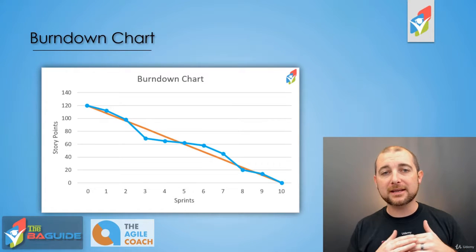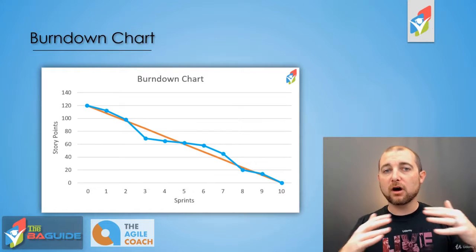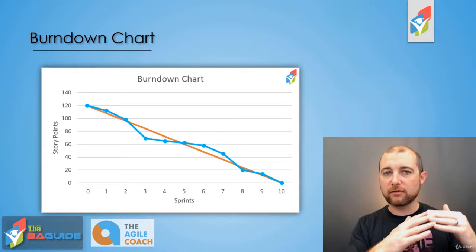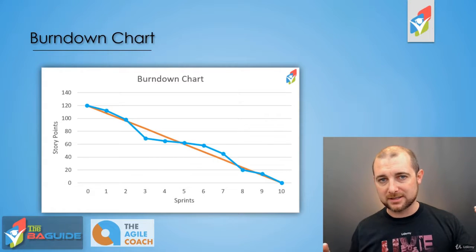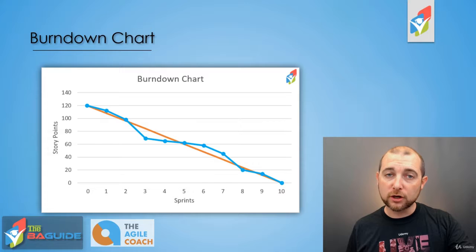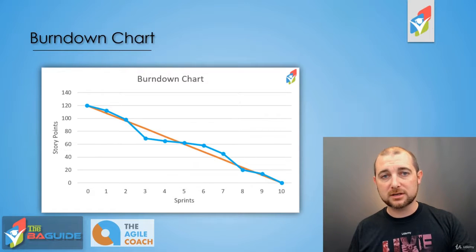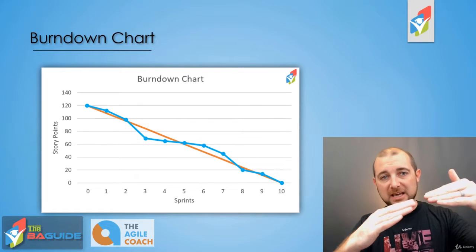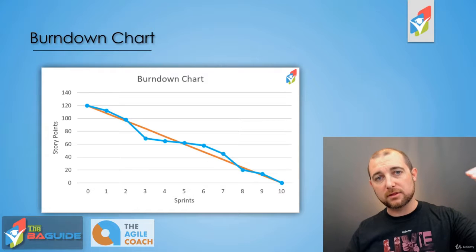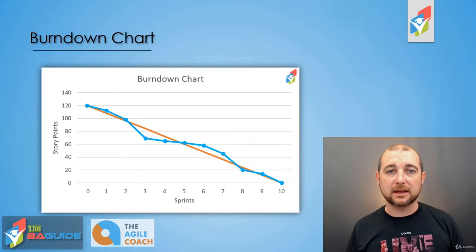The orange line is representative of what we want from a trending standpoint. For us to achieve our 120 story points in our 10 sprints, that orange line takes that into account — this is where we need to be in order to complete the project on time.